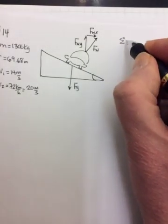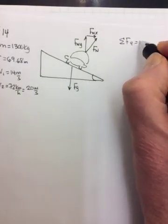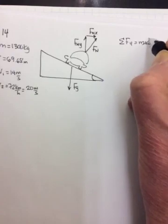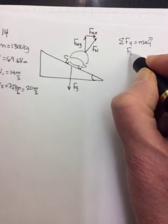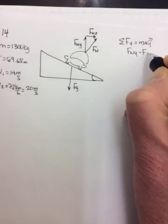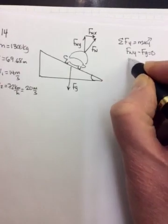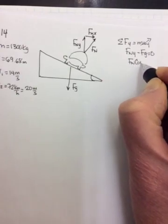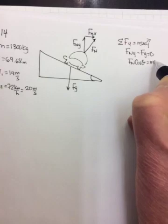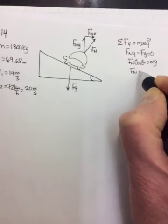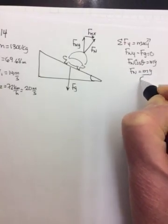So we do, without friction, sum of the forces in the y direction equals m-a-y, and it goes to zero. So Fn y minus Fg equals zero. So Fn cos theta equals mg. So Fn equals mg over cos theta.